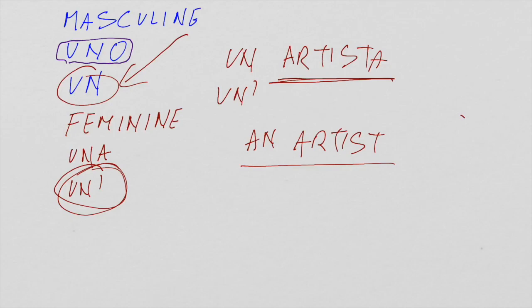So let's just repeat. You use UNO in front of nouns starting with Z, starting with S plus consonant, and starting with the group PS. You use UN in front of all the other masculine nouns starting with consonant like UN ragazzo, UN professore, and starting with vowels, UN amico. Now, the feminine. You use UNA in front of all female nouns starting with consonant, una professoressa, una dottoressa, and you use UN with the apostrophe in front of all female nouns starting with vowels.